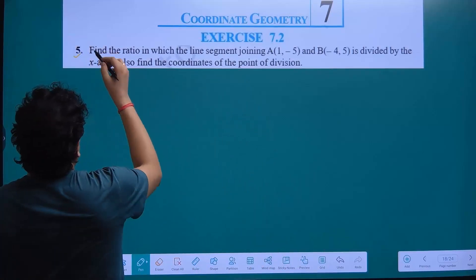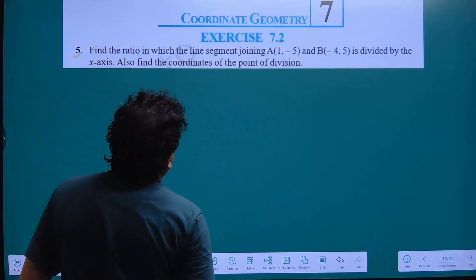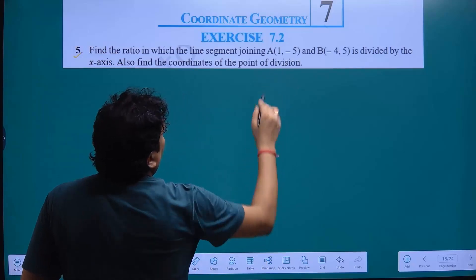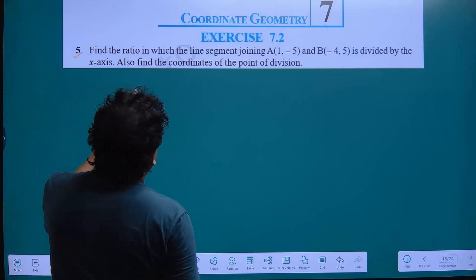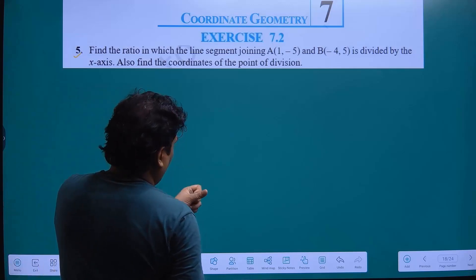Exercise 7.2 question number 5: Find the ratio in which the line segment joining A and B is divided by the x-axis. Also find the coordinates of the point of division.